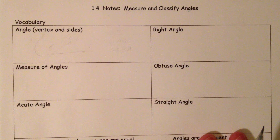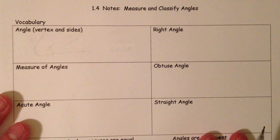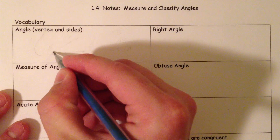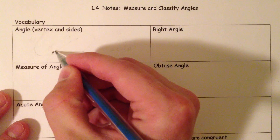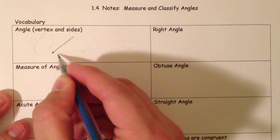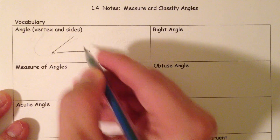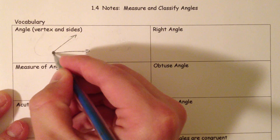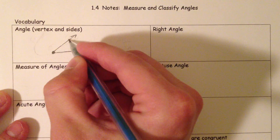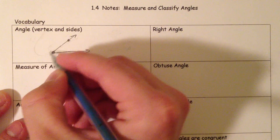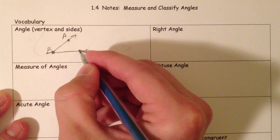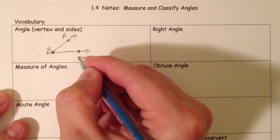We're going to start with a basic introduction to angles. Very basic — what is an angle? An angle is what is made when two rays come together and they have the same starting point. So you've got one ray called BA and the other ray called BC.